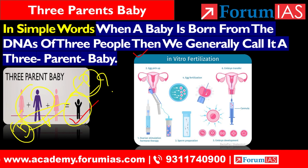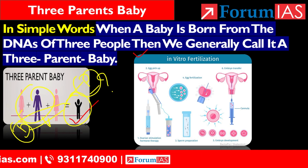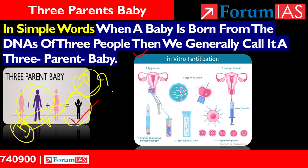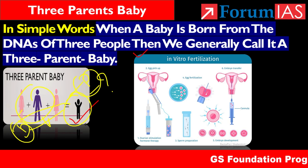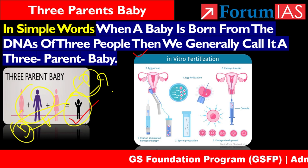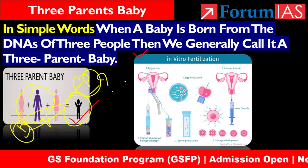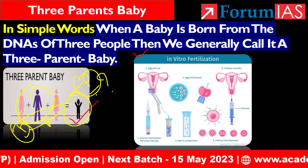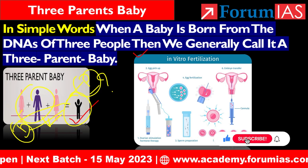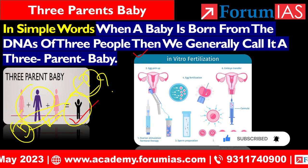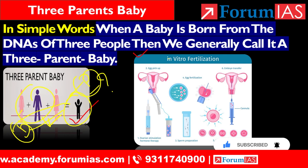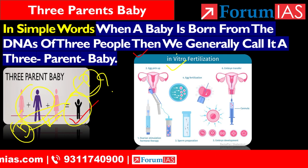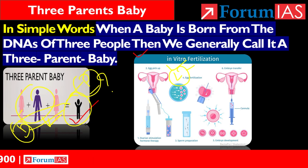The 3-parents baby technique includes mitochondrial gene therapy: the pronuclear transfer technique and the spindle nuclear transfer technique. The important point here is that the birth of a 3-parents baby always happens through in vitro fertilization — IVF technique — meaning the fertilization is done in a lab.